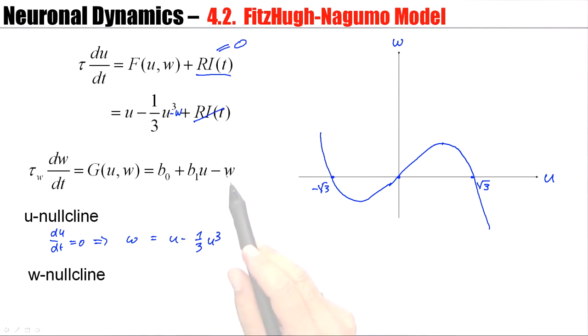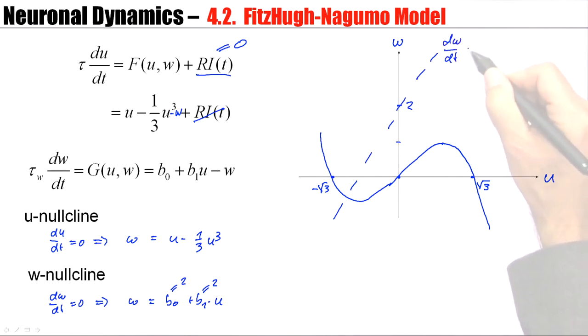So roughly it's something like this. And then I have my W nullcline, but the W nullcline is linear. dW/dt equals zero means W is B0 plus B1 times U. Now let's put both constants equal to two. So if U is zero, then W takes a value of two, and moreover it has a slope of two. So roughly, my W nullcline, the set of points with dW/dt equals zero, is a straight line which passes through two. The two lines cross here, so this would be the fixed point.